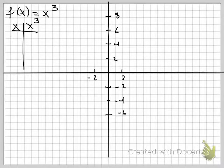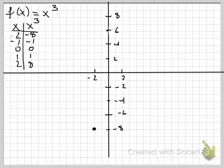And when I cube something that's negative, it's going to stay negative because I have three negatives. Negative times negative times negative, still negative. So we'll go ahead and cube those numbers, and then we will plot them and go ahead and graph.